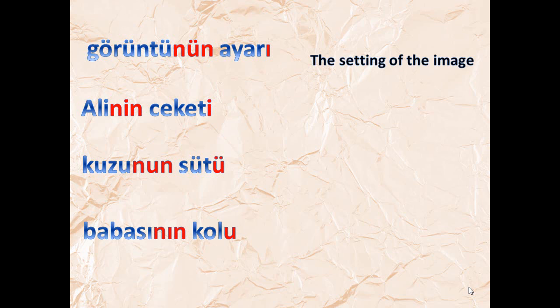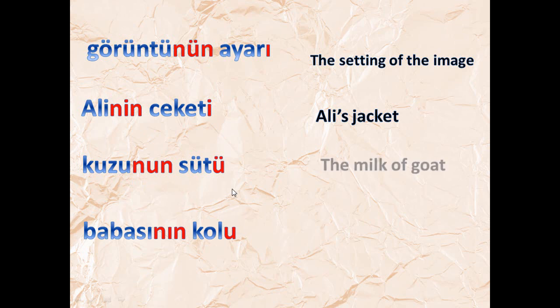'Görüntünün ayarı' — the setting of the image. 'Ali'nin ceketi' — Ali's jacket. 'Kuzunun sütü' — the milk of the lamb. Note: I forgot the apostrophe mark there, but you do not forget. 'Babasının kolu' — his father's arm.